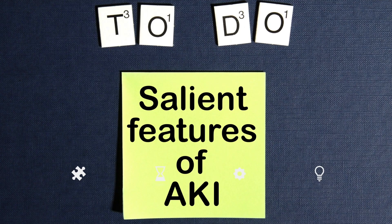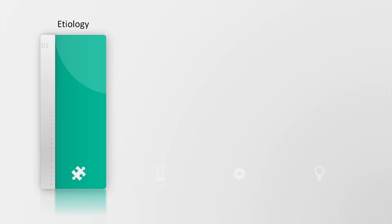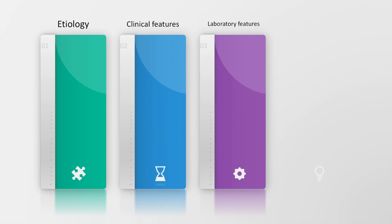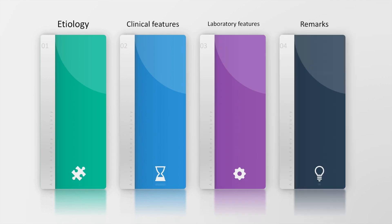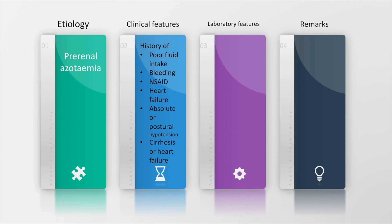When dealing with acute kidney injury, we must learn the salient features of AKI, which can be studied under the following headings: etiology, clinical features, laboratory features, and remarks. Let us talk about pre-renal azotemia.